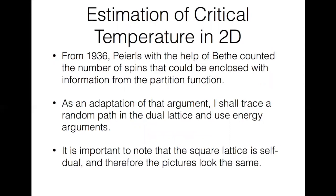I now move to an estimation of that critical temperature that we just proved existed. In 1936, Peierls, with the help of Belthe, counted the number of spins that could be enclosed with information from the partition function to find a critical temperature bound. But as an adaptation of that argument, I shall trace a random path in the dual lattice and use energy arguments. Now it is important to note that the square lattice is self-dual, and therefore these two pictures will in fact look the same.